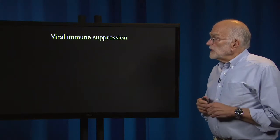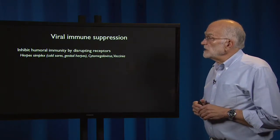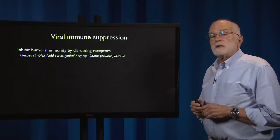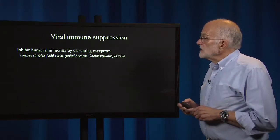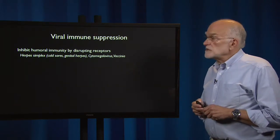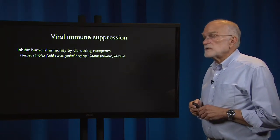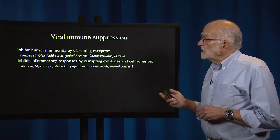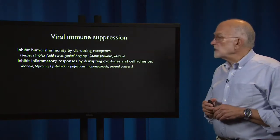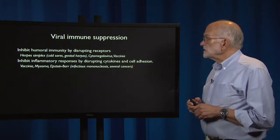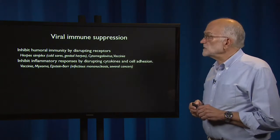Viruses can suppress the immune system. They do it by inhibiting humoral immunity, and that's done by disrupting sensors. Some of the viruses that do this are herpes simplex, cytomegalovirus, and vaccinia. They can also inhibit inflammatory responses by disrupting cytokines and cell adhesion, playing with the host's signaling system.